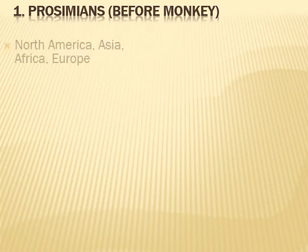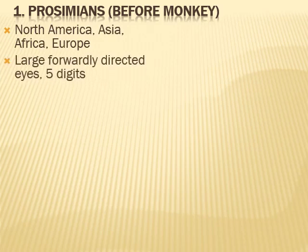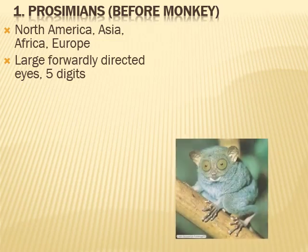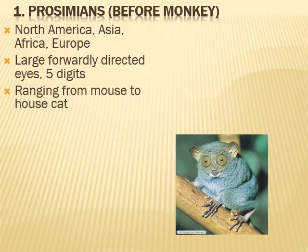Prosimians are the primates that lived before the appearance of monkeys in the world. They largely inhabited North America, Asia, Africa, and Europe. They had large, forwardly directed eyes with five digits on fore and hind limbs. There was variation in their size, ranging from mouse to cat size. They were tree dwellers and nocturnal.